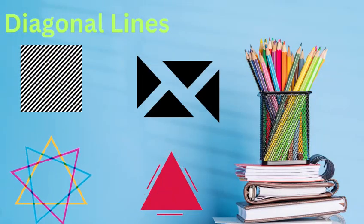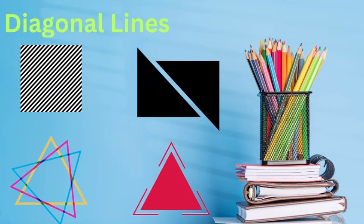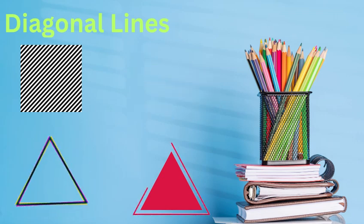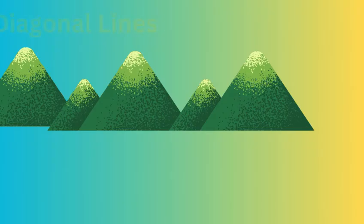Next, we have diagonal lines. Diagonal lines go slanty swoosh, like a slide at the park. Learn by example.